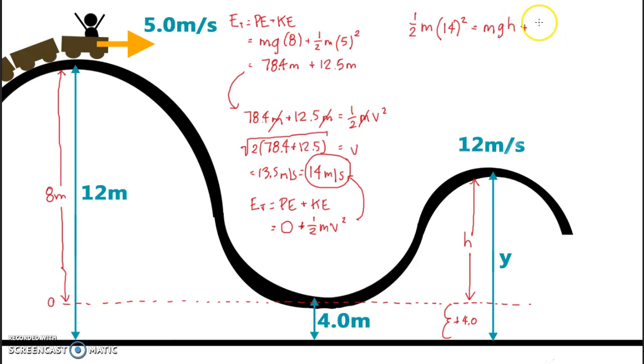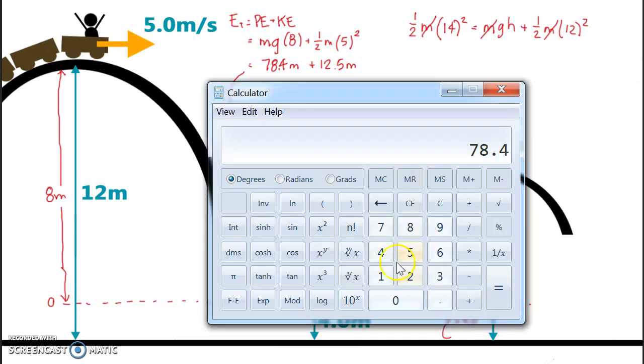So I also have to do my kinetic energy. It's 1 half M times 12 squared. Okay, so what do we got? Well, once again, awesome. M's cancel. I've got in the first one, I've got 14 squared. 14 squared, 196 times 0.5 is 98.